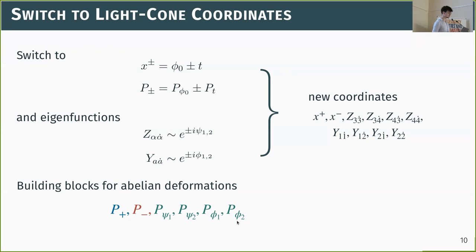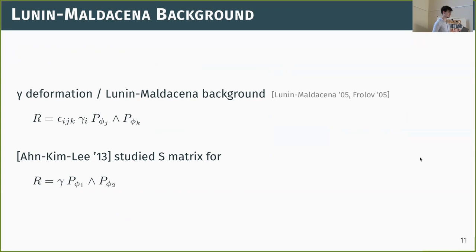A second change of variables switches to eigenfunctions of the remaining shift generators — I take exponentials of the remaining angles and call them zeta and y. The generators I will use for our abelian deformations are these six: four 'main group' generators forming the core team, and then two outsiders, p-plus and p-minus, which as we will see have special interactions with the gauge fixing procedure. The most famous example in this class is the gamma (or beta) deformation, which gives the Lunin-Maldacena background — an abelian Yang-Baxter deformation.